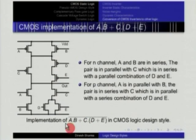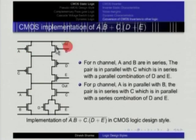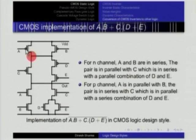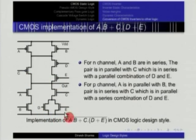For the P-channel network we read the same expression with opposite rules. A·B means A parallel B for PMOS. The plus means this parallel combination is in series with the next sub-circuit. C is a dot, so C is in parallel for PMOS. D+E is a plus, so D and E are in series for PMOS. Thus P-channel: (A parallel B) series (C parallel (D series E)). A very complicated expression is implemented in a single gate.